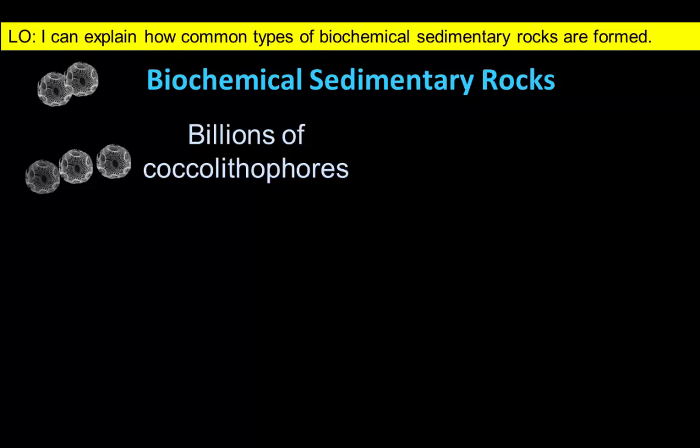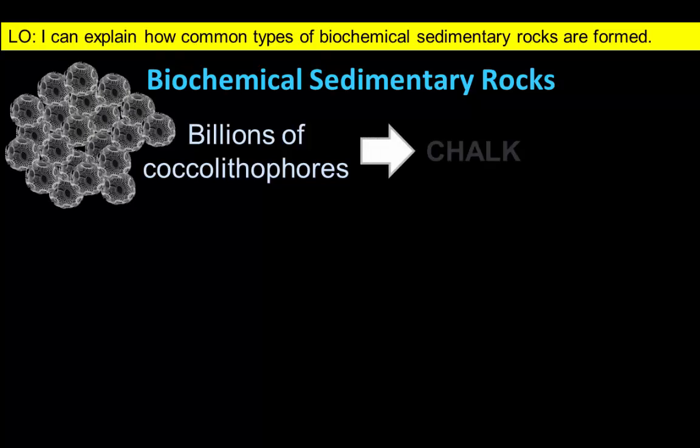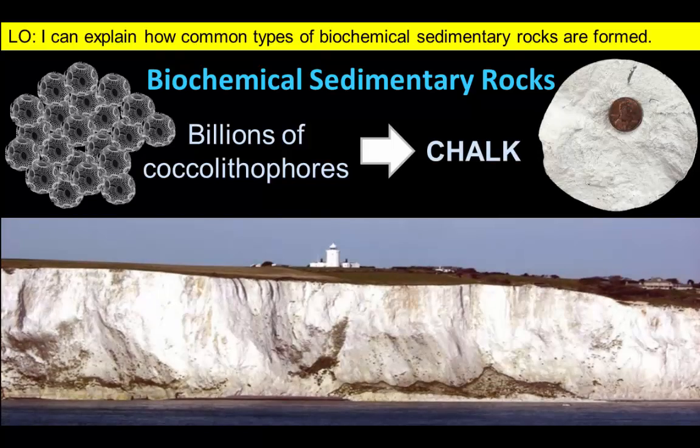Even though you couldn't see a coccolithophore with your naked eye, if enough of them are deposited together, they can form spectacular chalk cliffs like these along the southeast coast of England.